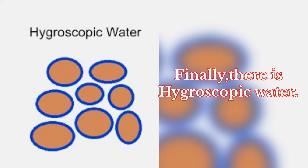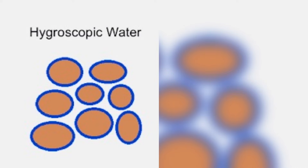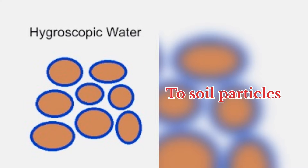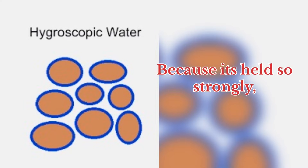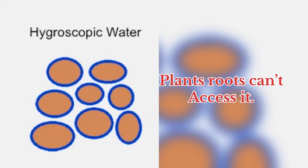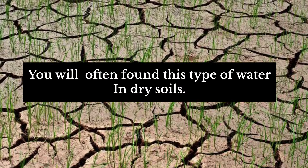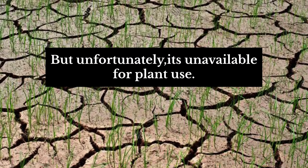There's hygroscopic water — a thin film of water that clings tightly to soil particles. Because it's held so strongly, plant roots can't access it. You'll often find this type of water in dry soils, but unfortunately it's unavailable for plant use.